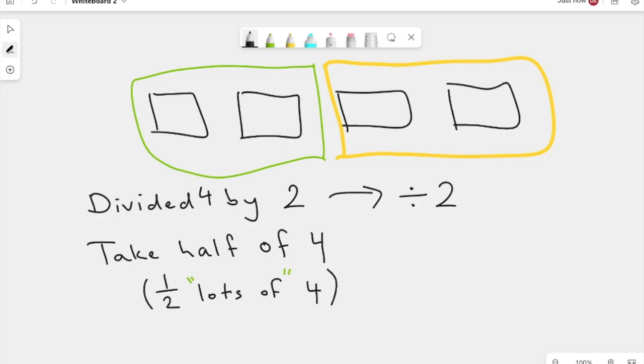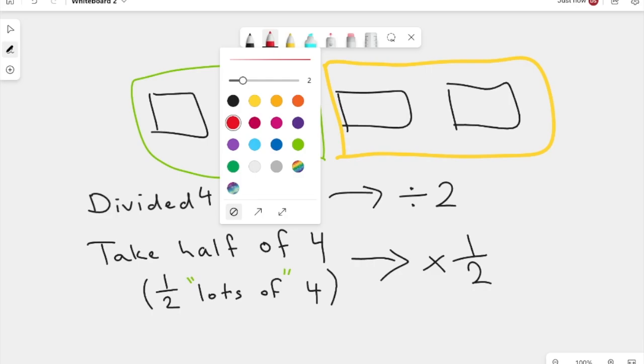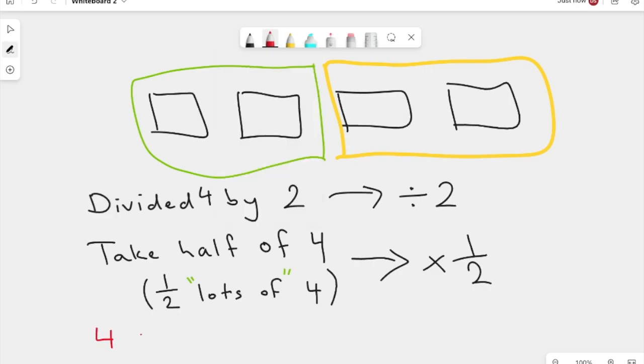So essentially when we say 'lots of', we're looking at some kind of multiplication. So this implies that we're taking half of four, half of four. And both of these things, whether we did, let's pick another color here, whether we did 4 times a half, taking half lots of four, or dividing 4 by 2, we get an equivalent answer.